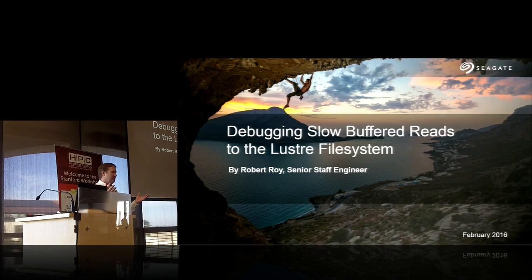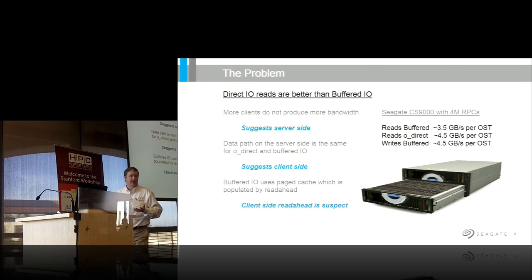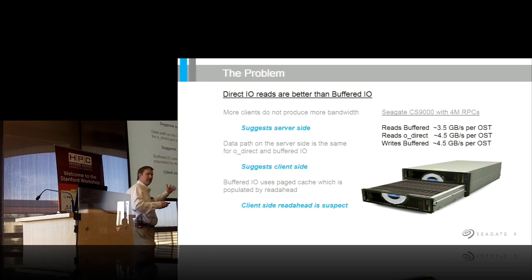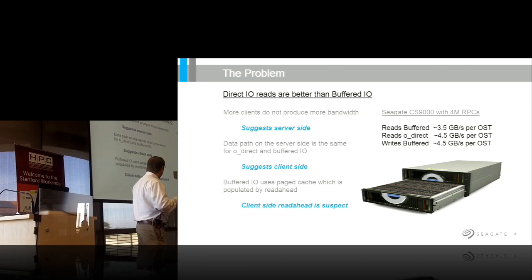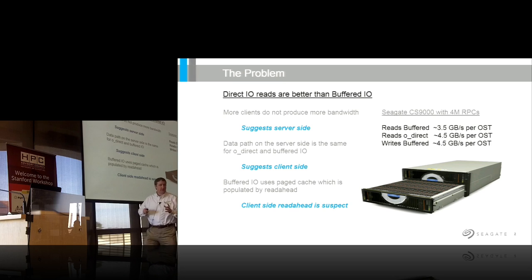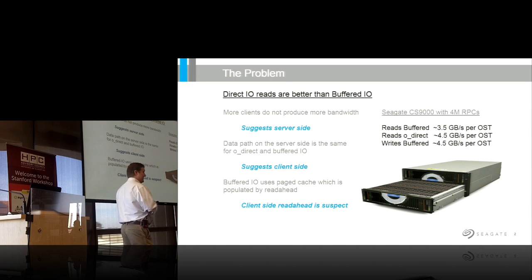Who's using Lustre in the crowd? So the problem is, what we noticed was that buffered I/O reads were slower than they needed to be. Slow is kind of hard to quantify, but our particular Seagate last-generation product, the Lustre product, operated at about 4.5 gigabytes a second per OST. This building block that we sell operates at 9 gigabytes a second per OST.